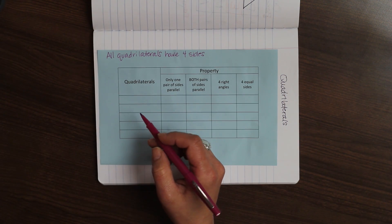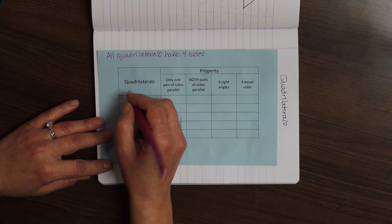All quadrilaterals have four sides. So, let's talk about the first one, the parallelogram. What is so special about a parallelogram?